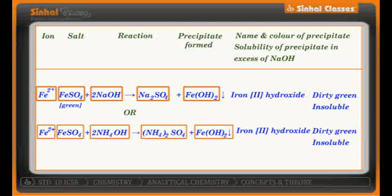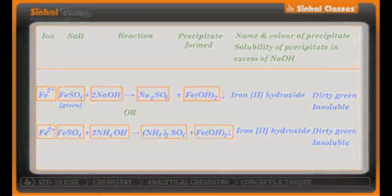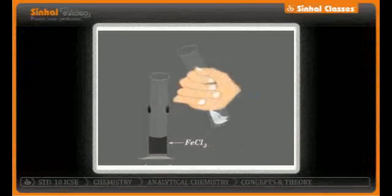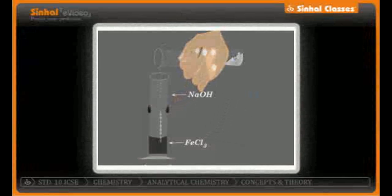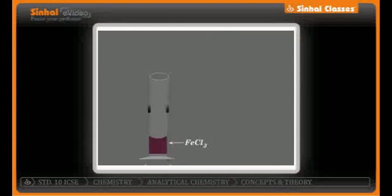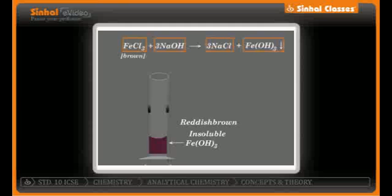Let us consider one more example: ferric chloride, FeCl3, when treated with sodium hydroxide, gives NaCl and ferric hydroxide, Fe(OH)3 — again a precipitate indicated by a downward arrow. This precipitate is reddish brown in color and is insoluble in excess of sodium hydroxide. You can balance the equation by putting 3 in front of NaOH and 3 in front of NaCl.